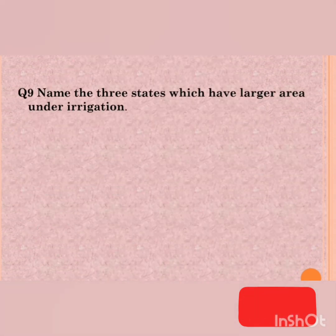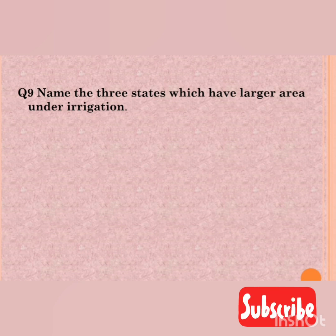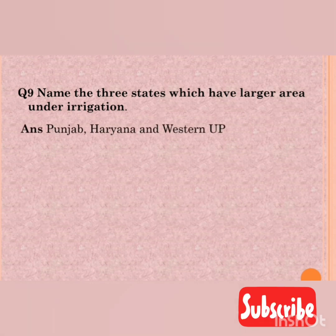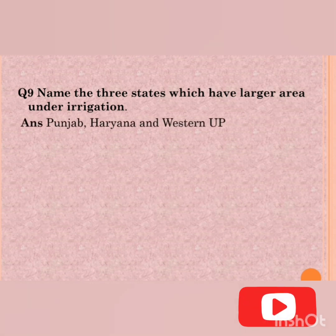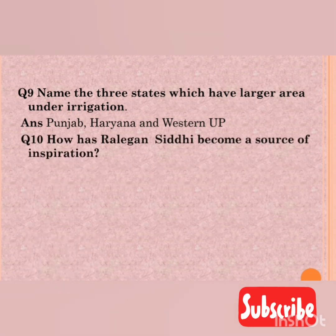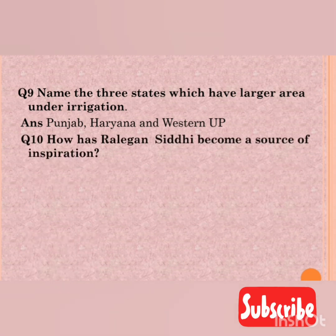Question number nine: name the three states which have the largest area under irrigation. (Bharat mein kaun kaun se rajya hain jahan ka kshetra sinchai mein use kiya jaata hai?) The answer is: Punjab, Haryana, and Western Uttar Pradesh.